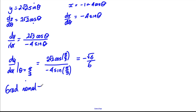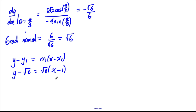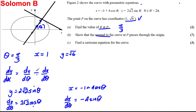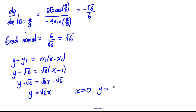The gradient of the normal is the negative reciprocal: 6/√6, which simplifies to √6 (multiplying top and bottom by √6). Using y - y₁ = m(x - x₁) with the point (1, √6): y - √6 = √6(x - 1). Tidying up: y - √6 = √6x - √6, so y = √6x. When x = 0, y = 0 — therefore the normal passes through the origin.